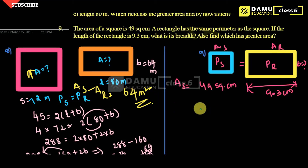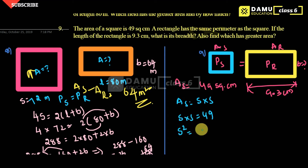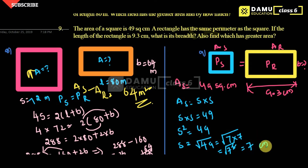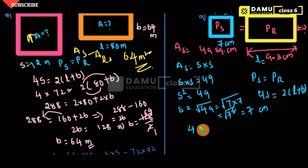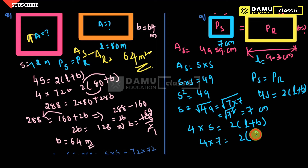So first write the formula. Area of square is given as 49 square centimeters. From area of square equals side into side, so S squared equals 49, then S equals square root of 49. Since 7 into 7 is 49, the square root and square cancel, giving S equals 7 centimeters. Now we can equate the perimeters: perimeter of square equals 4 into S, and perimeter of rectangle equals 2 into L plus B. So 4 into 7 equals 2 into 9.3 plus B.